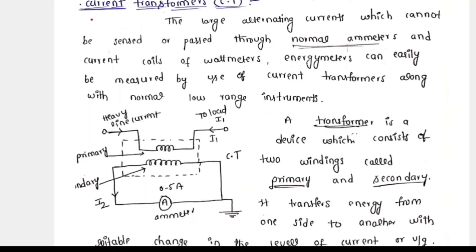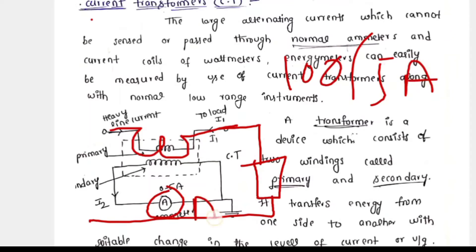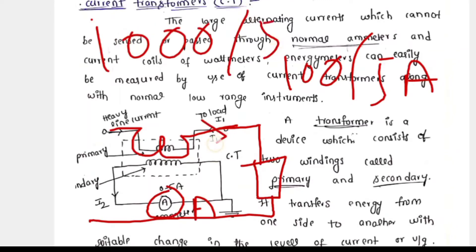Now, what is a current transformer? You can see the diagram. The primary winding of a current transformer has a very small number of turns and it is connected in series with the load. The secondary winding is connected to the ammeter. Most current transformer ratios are 100/5, 200/5 — that is, 200 amps to 5 amps. So when primary current is 1000 amps, the secondary current will be 5 amperes.